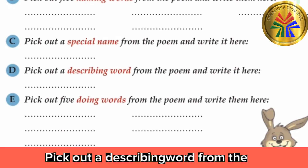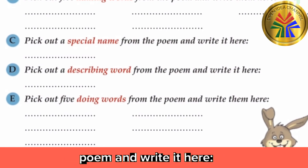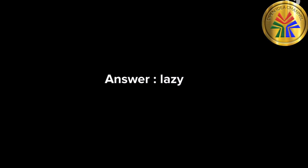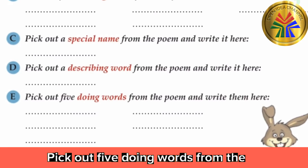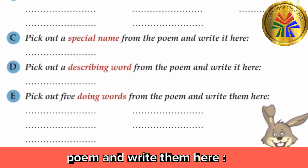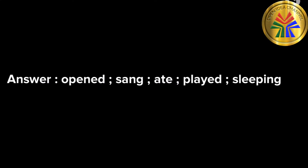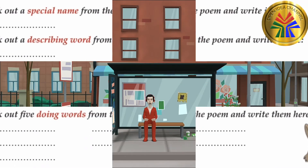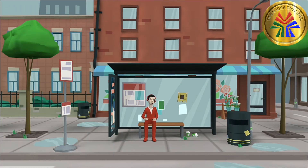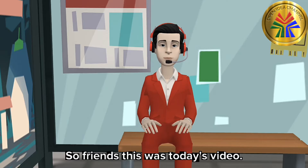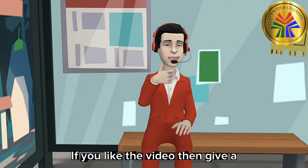D. Pick out a describing word from the poem and write it here. Answer: lazy. E. Pick out five doing words from the poem and write them here. Answer: opened, sang, ate, played, sleeping.